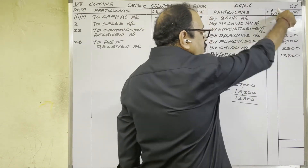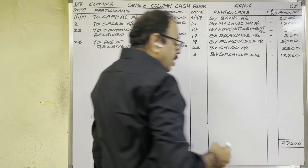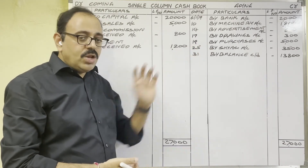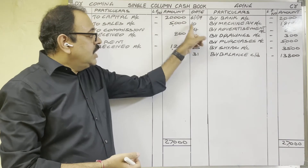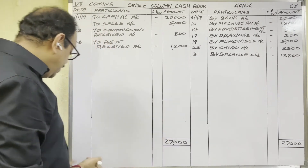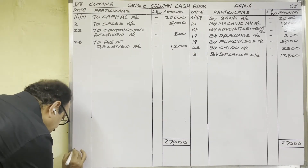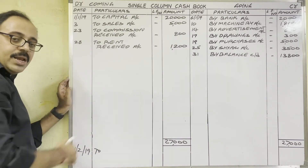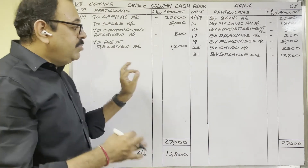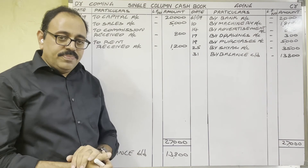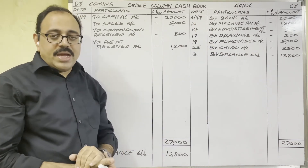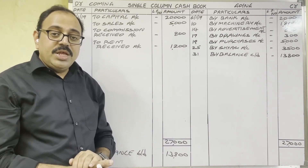As a student you prepared the cash book for one month, but in a real organization you have to prepare it every month. In January there is some balance, and that balance must be brought to February. The credit side showed 'Balance Carried Down', so now on the debit side bring it forward. The date should be 1st February 2019. Write: 'To Balance Brought Down', 13,800 rupees. This means that on 31st January 2019 the cash balance according to accounts is 13,800 rupees.